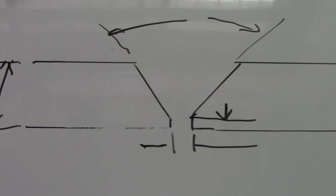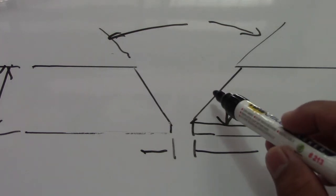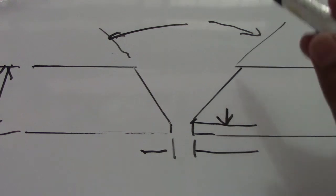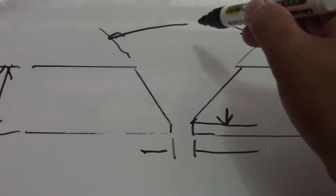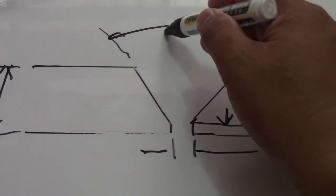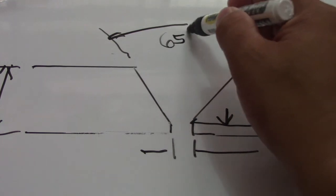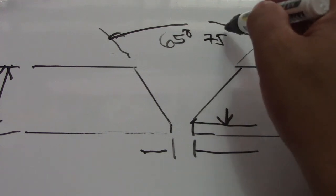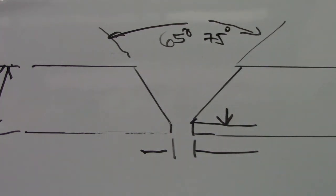This is a single butt joint. And we have a degree for this angle. We have 65 degrees, positive 65 degrees, negative 75 degrees.